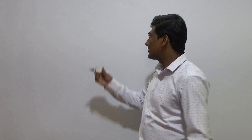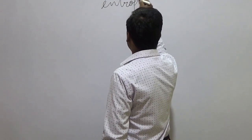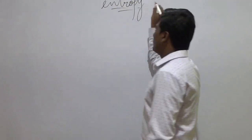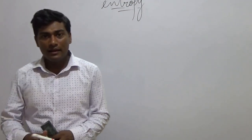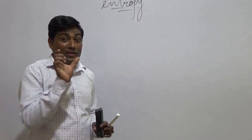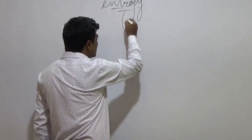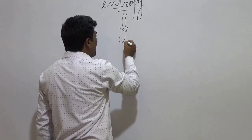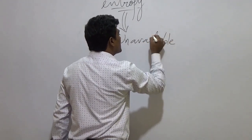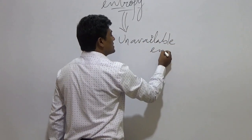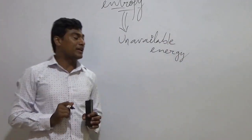Now, entropy. We will write one line for entropy. Entropy is nothing but the unavailable energy. We will discuss how this is unavailable energy. So, entropy is the unavailable energy.